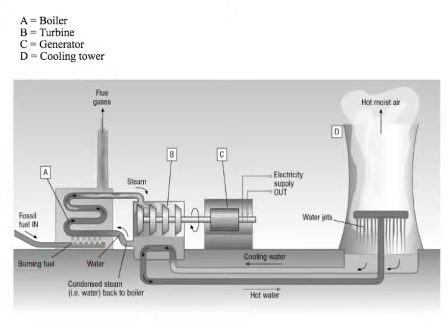This is burnt, so the chemical energy is transferred to thermal energy, which heats the water moving through this pipe. The water is boiled and turned to steam, or water vapour, which turns the turbine.